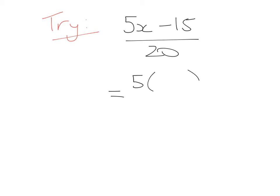And that will then become 5 times what gives me 5x, that's x, and 5 times what gives me minus 15, that's minus 3. On the bottom of my fraction then I say 5 times what gives me 20, and that's 4.